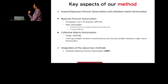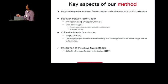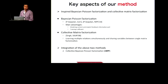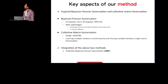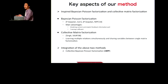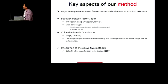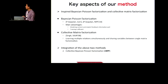So let's explain the key aspects of our method. Our model is based on Bayesian Poisson Factorization and Collective Matrix Factorization. Bayesian Poisson Factorization was published in 2014, and the main advantage of this model is that it can model content and implicit feedback well, and the training speed is fast. However, the original form of Bayesian Poisson Factorization can't handle diverse relations, so we resort to the idea from Collective Matrix Factorization to handle multiple relations in our problem. From a high-level perspective, our model is an integration of these two methods.